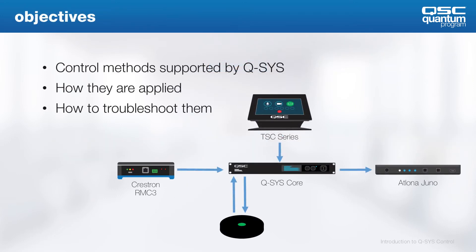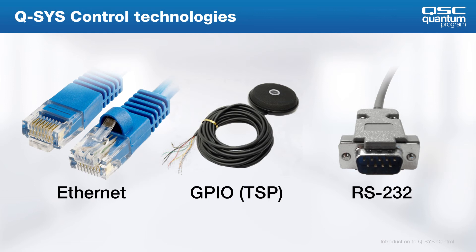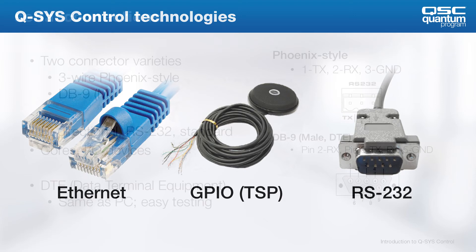Our objectives for these videos will be to take a look at these different control methods with a little bit more detail, see how they're applied, and then provide some basic troubleshooting guidelines. Let's start with control signals in and out of QSYS. These signal types include Ethernet, GPIO, and RS-232 or serial.